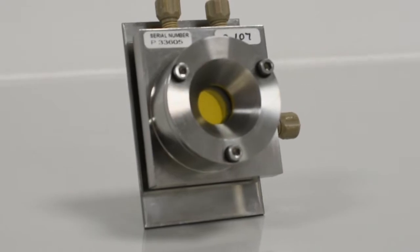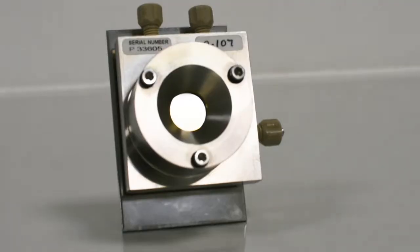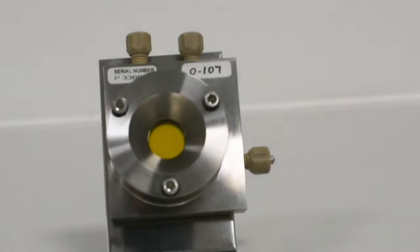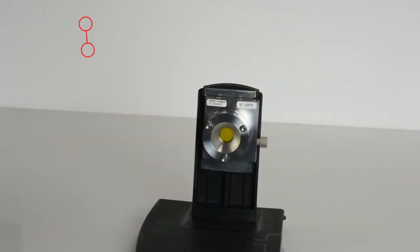The cell has a fixed path length of 100 microns with ZNSE windows and a wedged PTFE spacer to suppress interference fringing. The cell itself can be pressurized to 30 psi, which is approximately 2 bar.